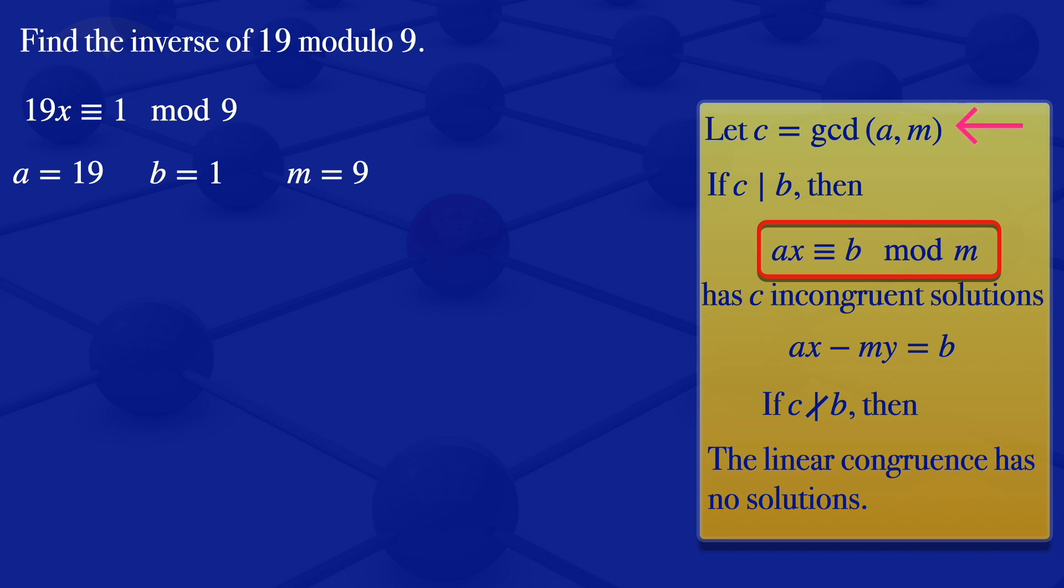Our c is the greatest common divisor of a and m, so it will be the greatest common divisor of 19 and 9. That greatest common divisor there is 1. In this case, we see that 1 divides b, therefore we have one incongruent solution.